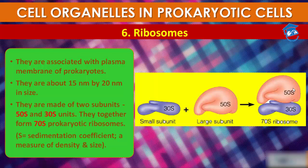The 30S and 50S subunits come together to form a 70S prokaryotic ribosome. Ribosomes are the site of protein synthesis — you can call them protein factories. Several ribosomes may attach to a single mRNA and form a chain called a polyribosome or polysome. Ribosomes of the polysome translate mRNA into protein. S represents sedimentation coefficient — a measure of density and size.